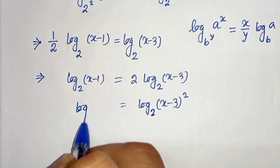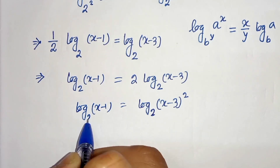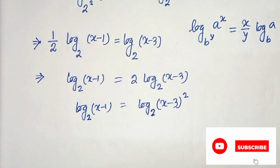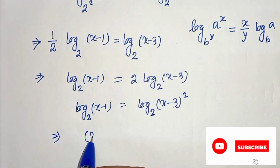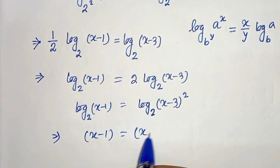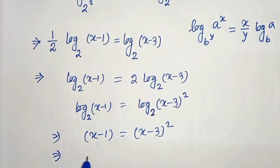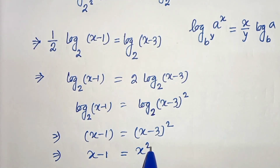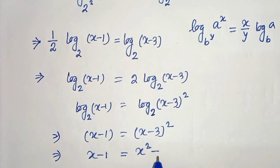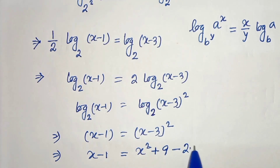On the left-hand side we have log of (x minus 1) base 2. Now if we compare both sides, we get x minus 1 equals (x minus 3) squared. Expanding using the (a minus b) squared formula: a squared plus b squared minus 2ab, we get x squared plus 9 minus 6x.